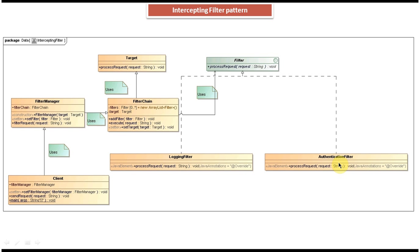Next is the filter chain. The filter chain is responsible for executing the filters in the proper order. Basically, the filter chain will contain a collection of filters. It will iterate through each filter and execute all the filters in the proper order, and then it will execute the target.